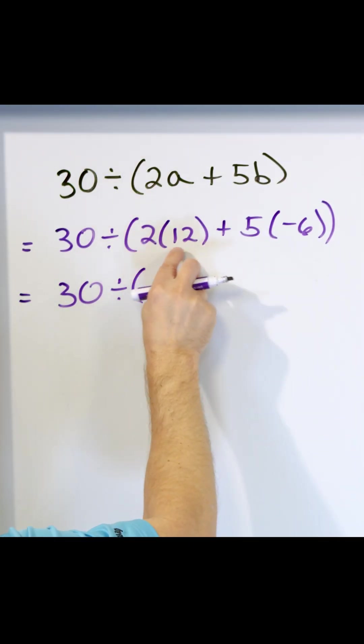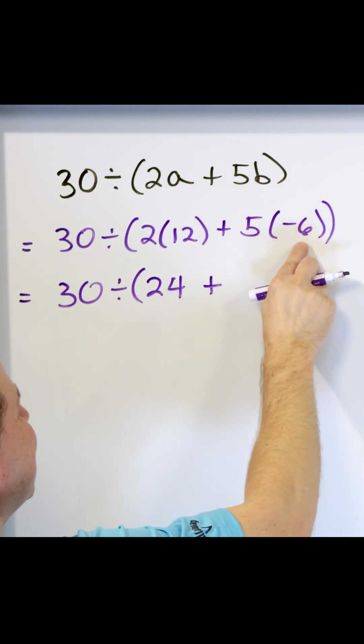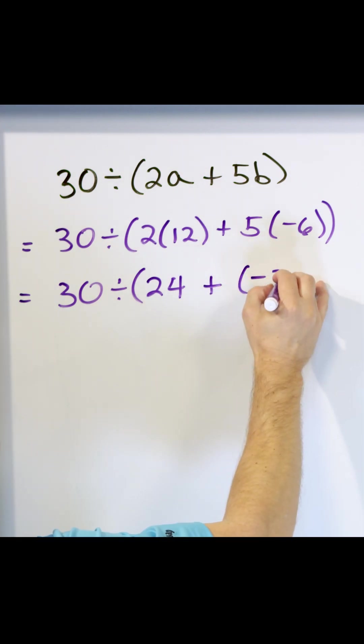So 2 times 12, positive times positive is 24, and then 5 times negative 6 is negative 30, because positive times negative.